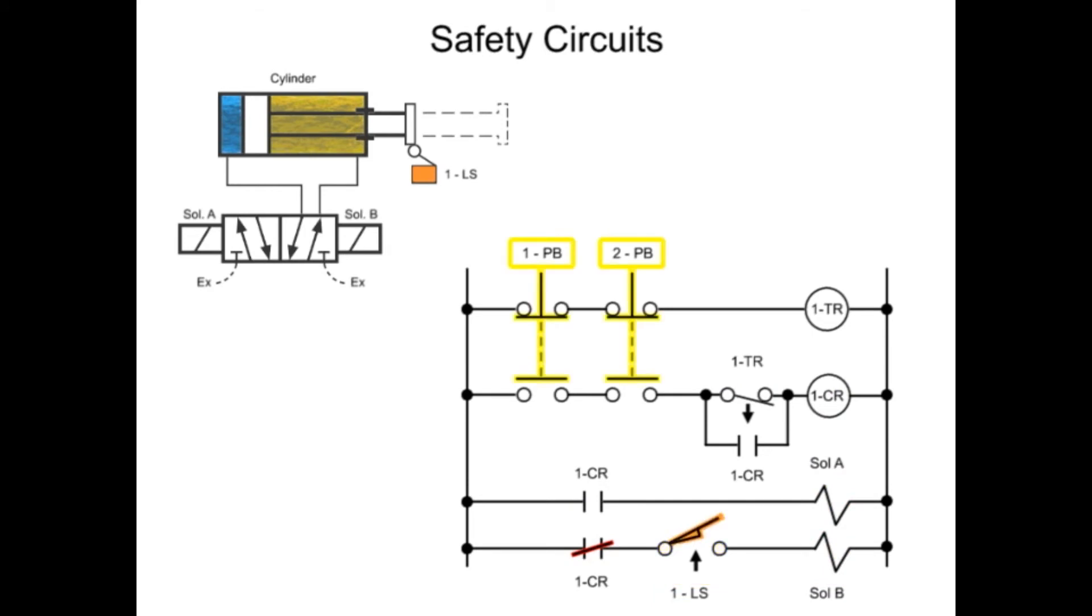When both push buttons are in the unactuated position, the timing relay is energized, and the normally open-timed open-timer contact is shut. No power can flow to the control relay. If an operator depresses a single push button, power to the timing relay is removed, and the off-delay timer starts to time.